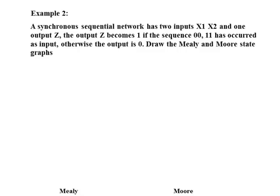Example 2. A synchronous sequential network has two inputs, X1 and X2, and one output Z. The output Z becomes 1 if the sequence 0, 0 followed by 1, 1 has occurred as input. Otherwise the output is 0. Draw the Mealy and Moore state graphs.